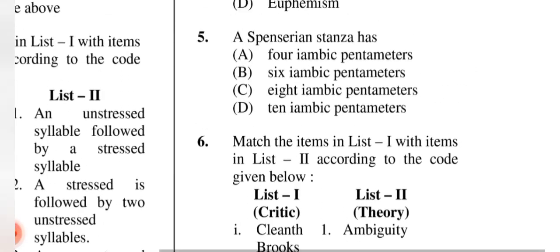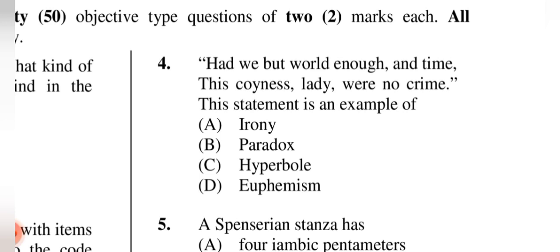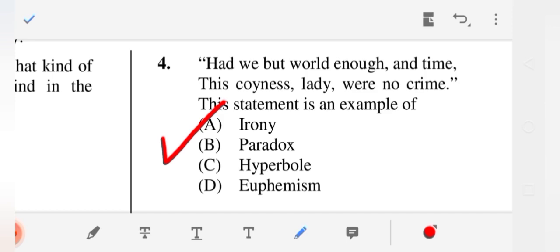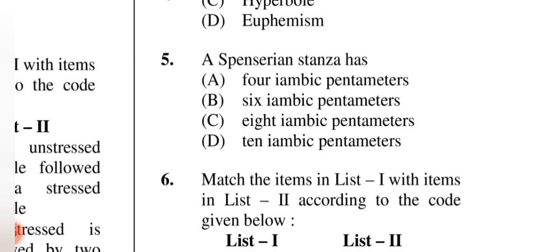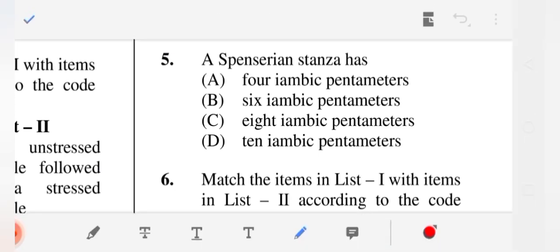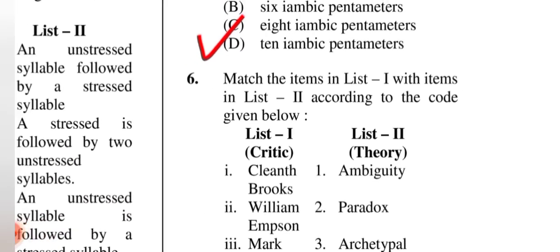Question 4: 'Had we but world enough and time, this coyness, lady, were no crime' — this statement is an example of what? The correct answer is irony. Question 5: The Spenserian stanza has — the correct answer is (C) eight iambic pentameter lines.